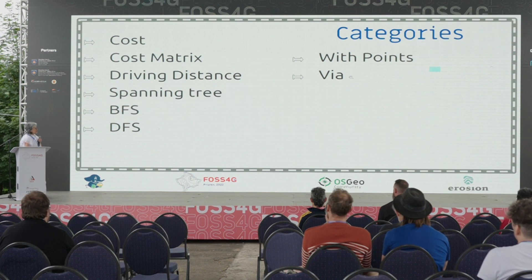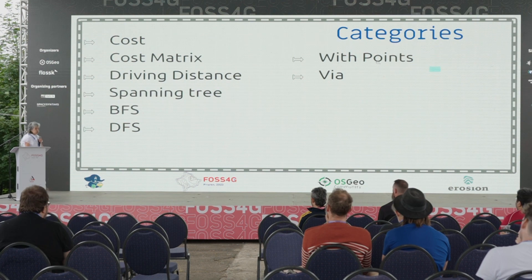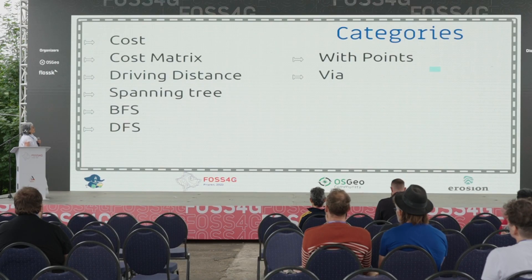The 'with points' functions are all still proposed. They haven't moved up because there's an open issue I haven't had time to fix. They're usable, but I'm not happy with that section of the code. We also have 'via' functions — for example, Dijkstra via — which form their own category.